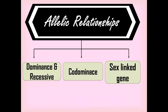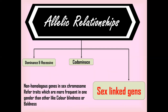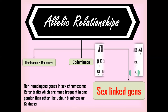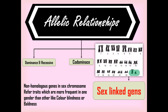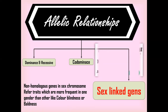Today in this session we are going to study about sex-linked genes and non-homologous genes in sex chromosomes in humans, which refer to the type of characteristics that are more common in one gender compared to another. For example, color blindness or baldness. These sex-linked genes are present on the 23rd pair of chromosomes, which describe the primary sexual characteristics.